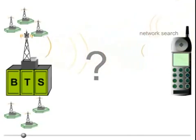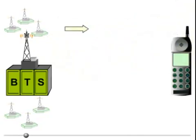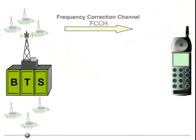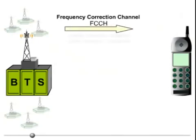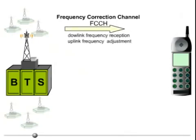For this purpose, the BTS sends out the frequency correction channel, FCCH, at short regular intervals, to help the mobile station find a frequency for downlink reception and adjust its frequency oscillator for the uplink transmission. To do so, it picks out the strongest received signal.